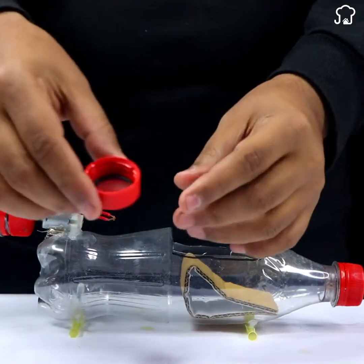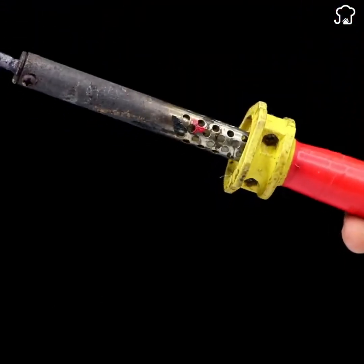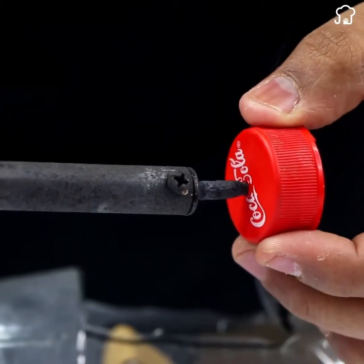Then we'll take four soda caps, and with the help of a hot soldering iron, we'll make holes right in the middle of the caps.